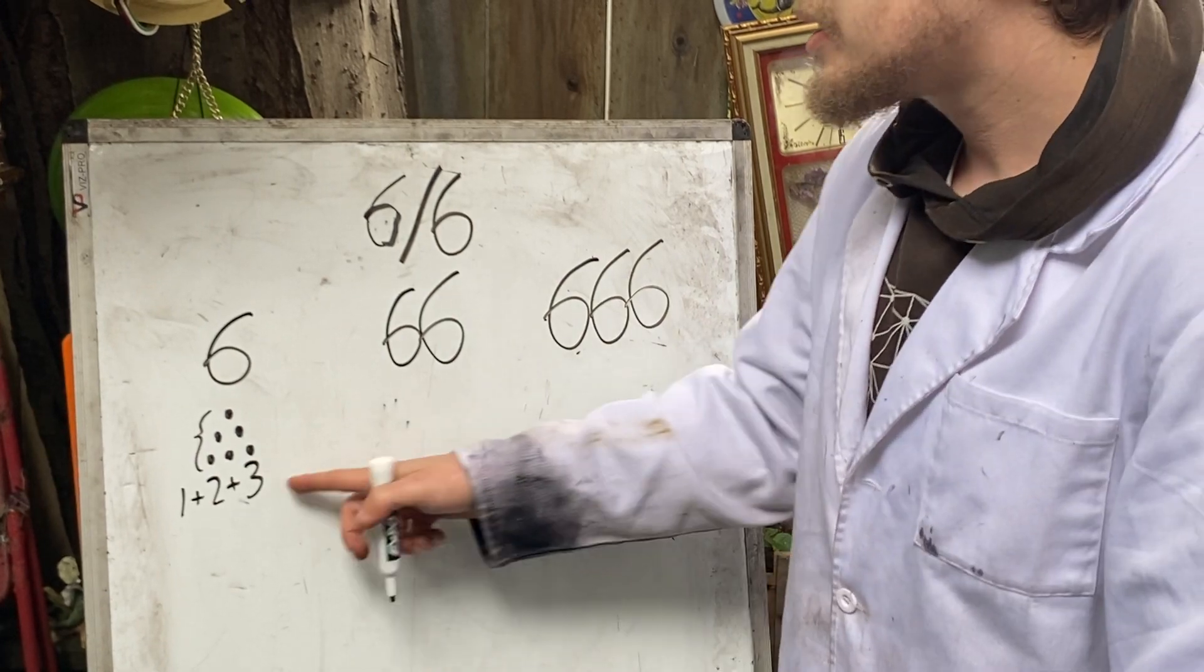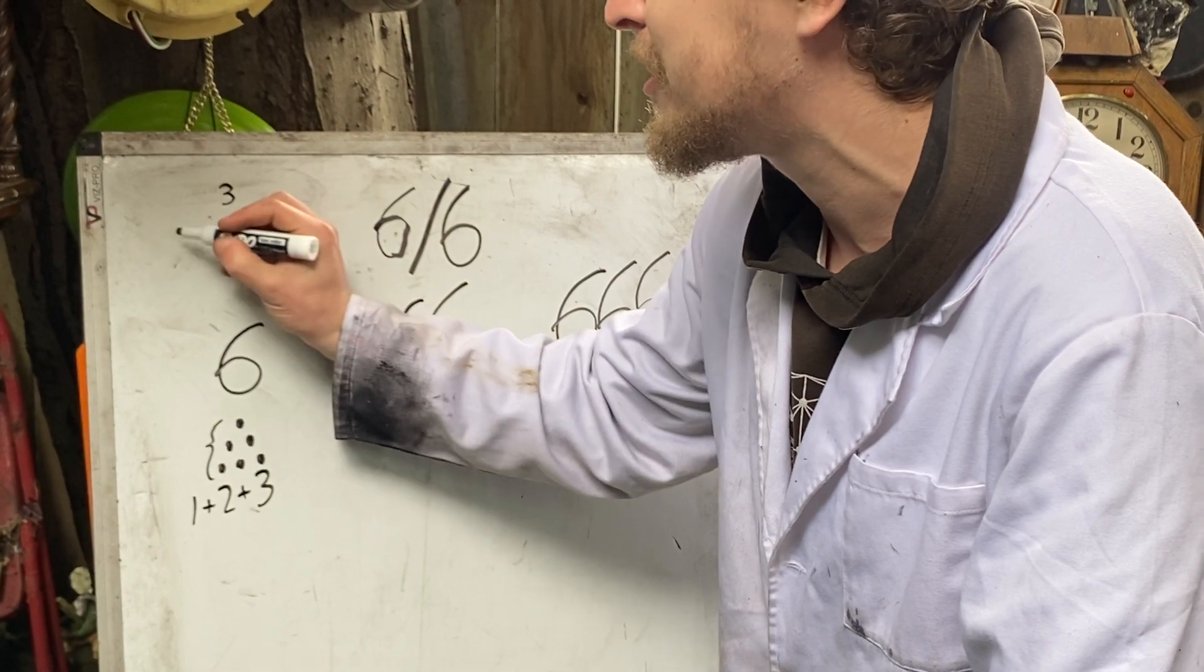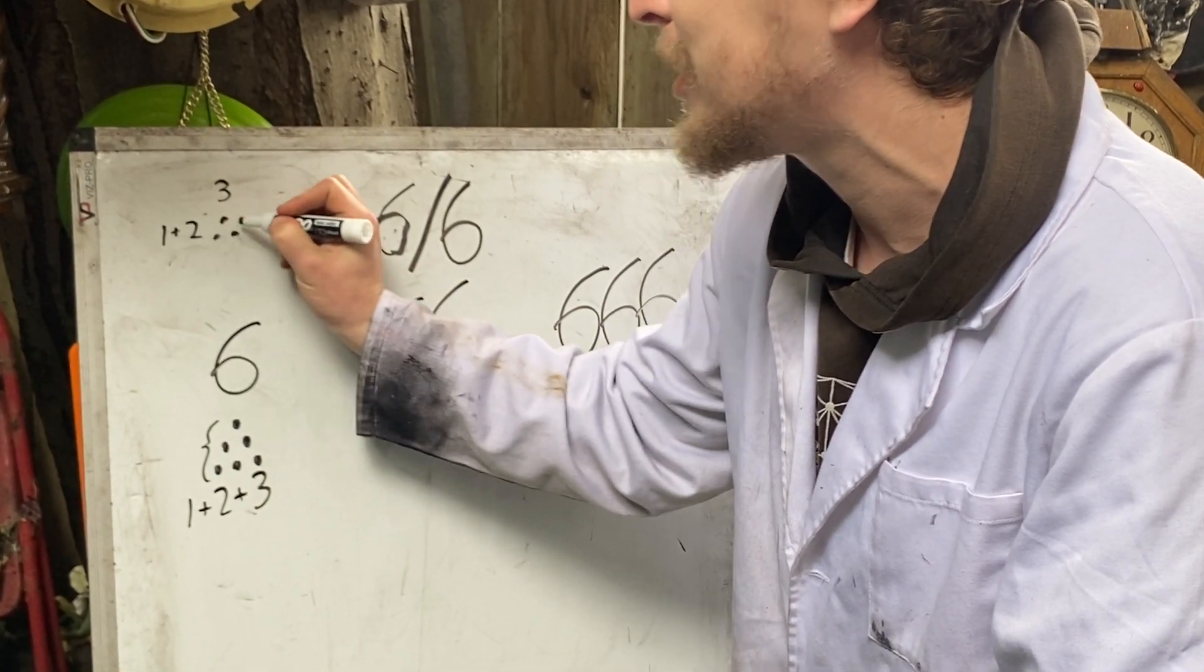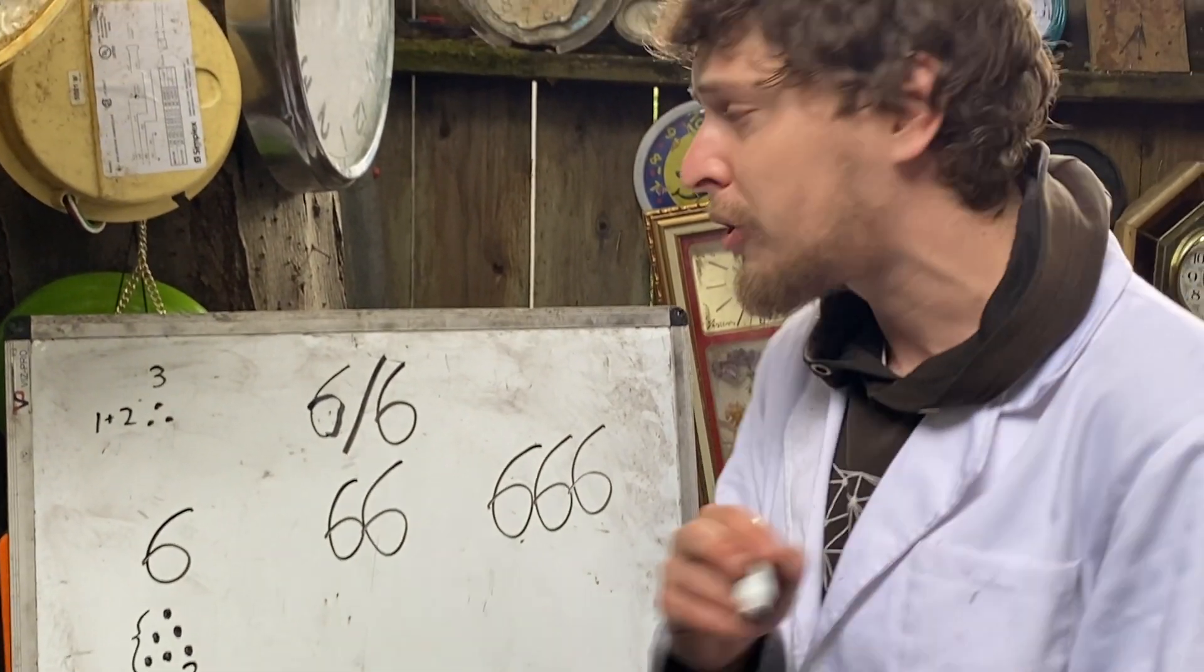Now in fact, since three itself is a triangular number, that's the second triangular number, one plus two, six is what's known as a doubly triangular number.